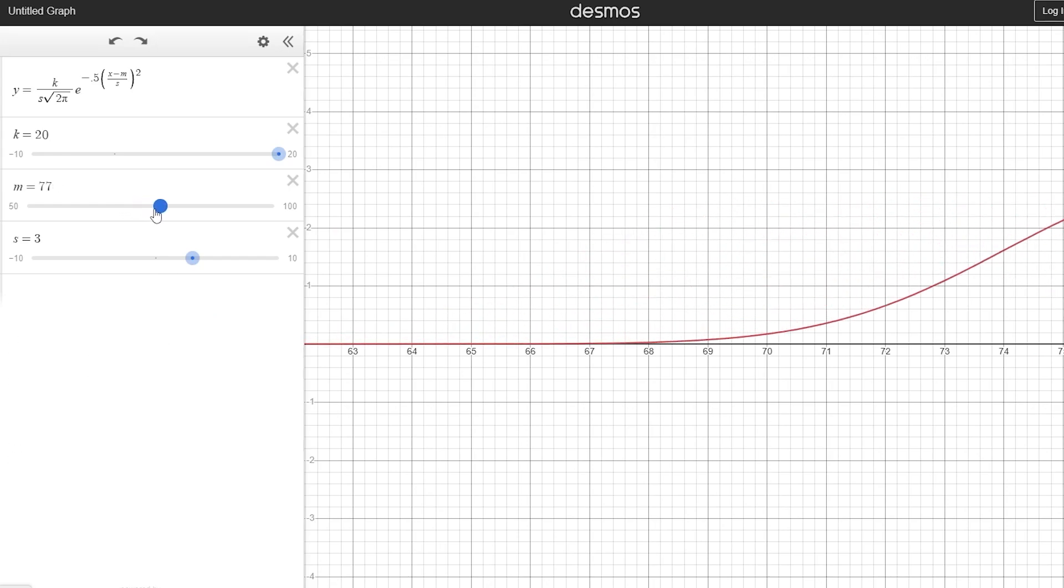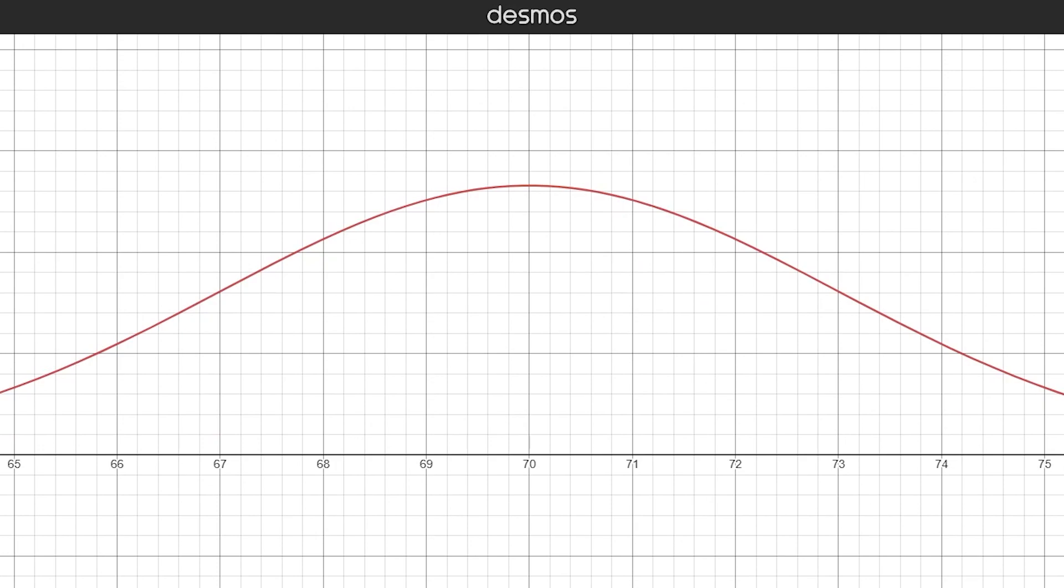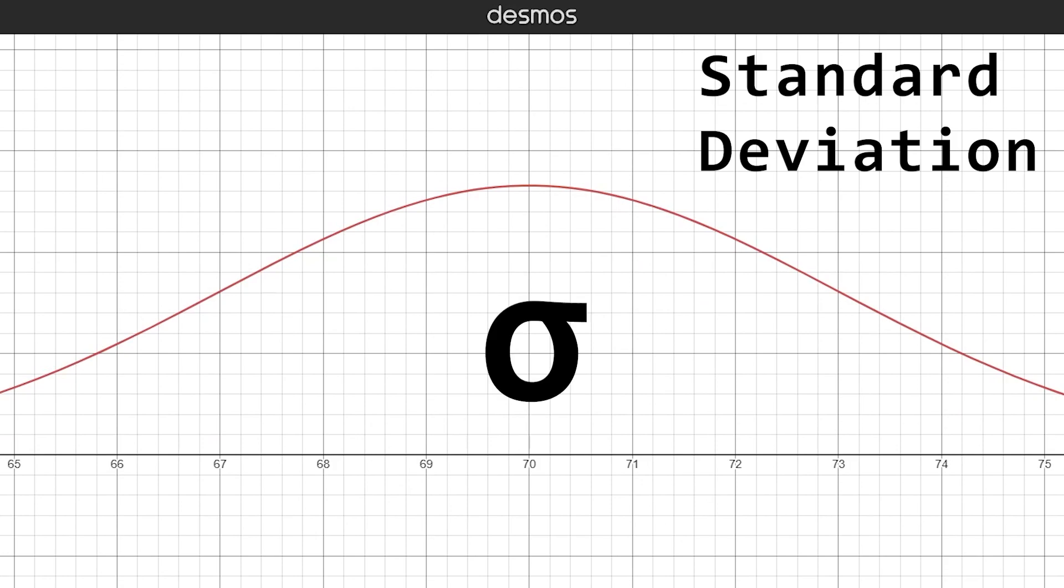If the mean changes, the whole distribution appears to slide left or right. There is one more property that defines our normal distribution, and that's what we call the standard deviation, and it's represented by this symbol called sigma.